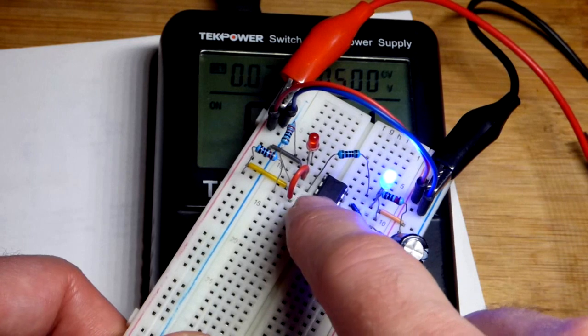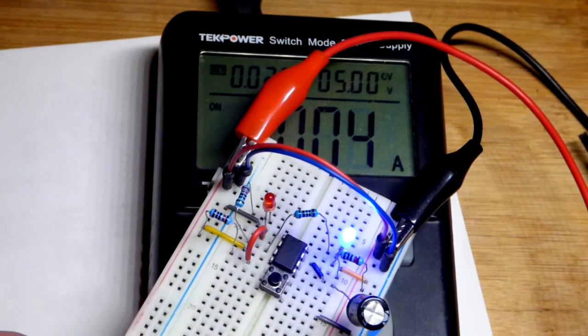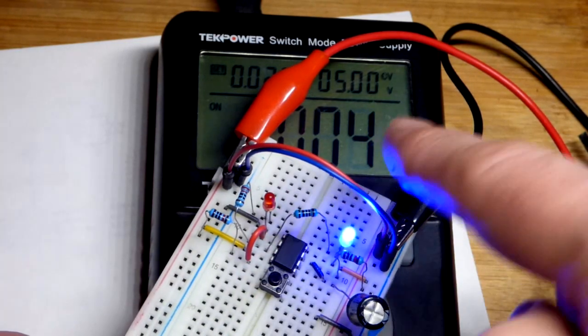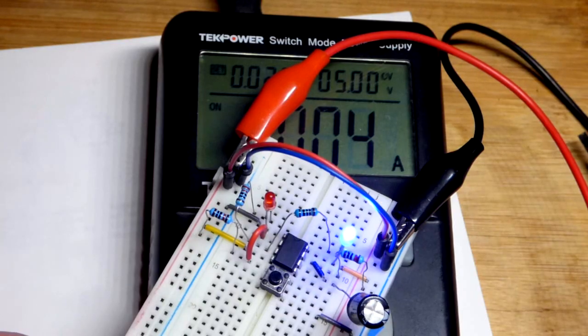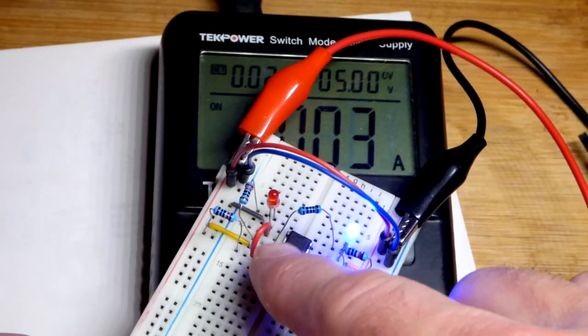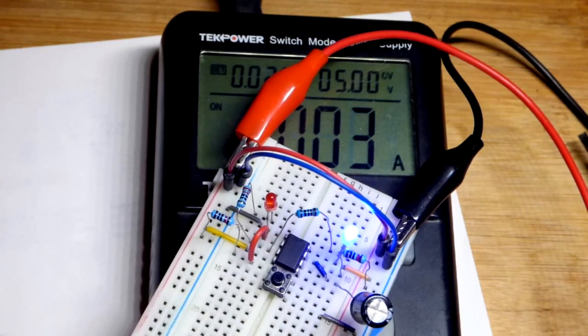The unstable part is when you press the button right there and we're going to look at the current. You're going to see it go up and it should only be about a second. So, that may not have been long enough to get an accurate measurement right there.